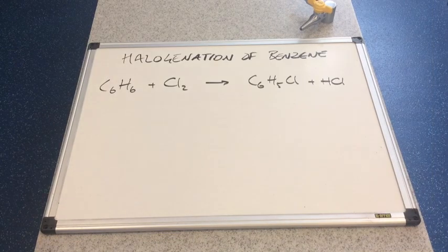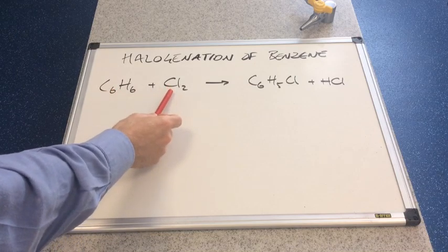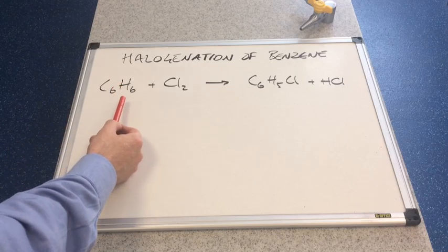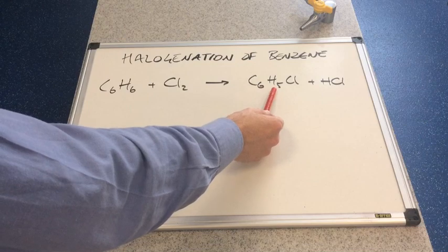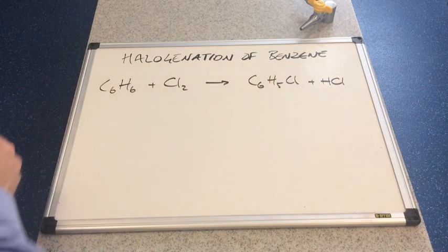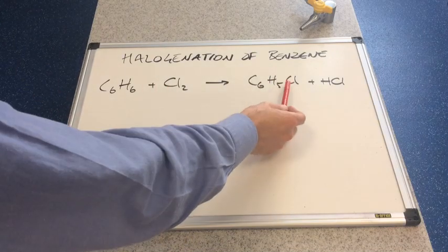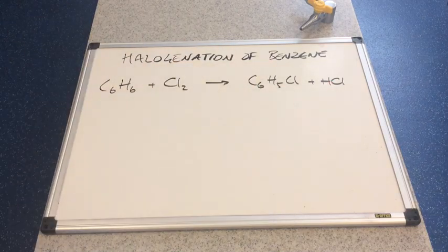Let's take a look at the halogenation of benzene now. I've written on the board the overall reaction between benzene and chlorine. Again, you can see that monosubstitution has taken place. We've lost a hydrogen, C6H5 now. We've replaced it with one of the chlorines from the Cl2. The H and the Cl have combined to form HCl.